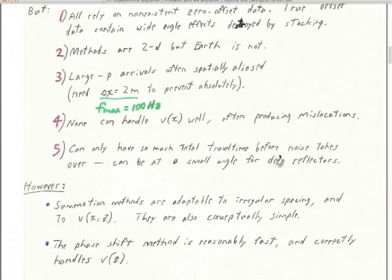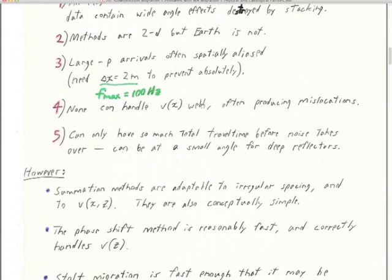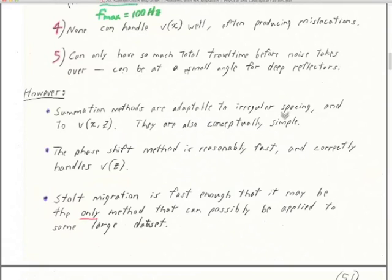In Nevada, velocity variations in X — like at the edge of basins — are terrible, and none of these methods can handle that. With Stolt migration you can enter any bizarre velocity model and it will try, but it's not going to get it right because Stolt migration is built on constant velocity. If you have a steeply dipping structure at reservoir depth, you've got to be way far away to see it as a reflection, so it's going to have a large travel time — much larger than for a horizontal reflector at the same depth — and you're always fighting noise.